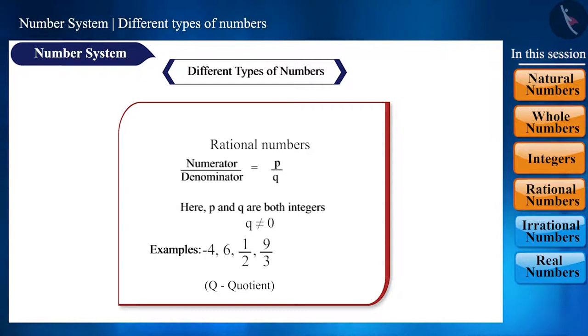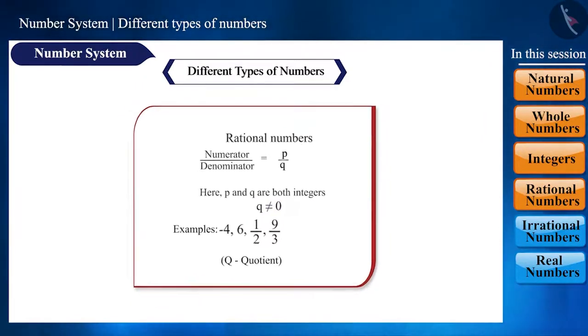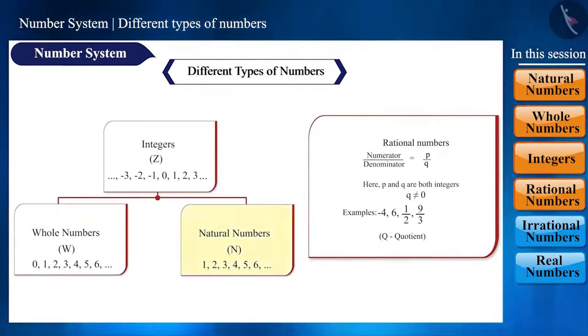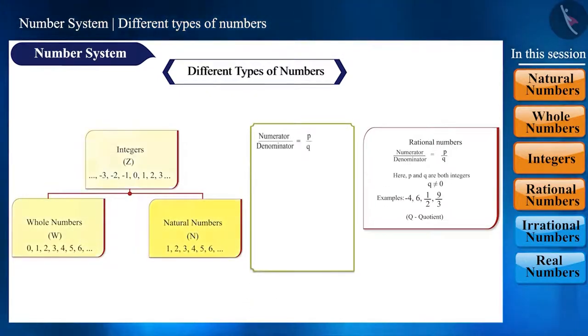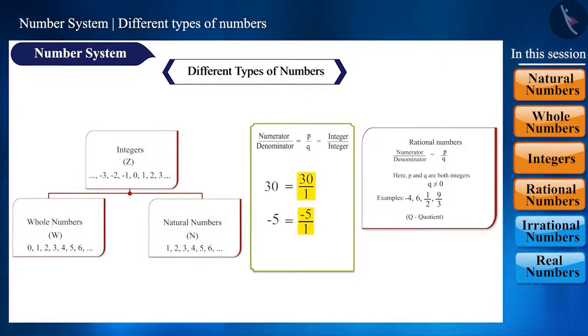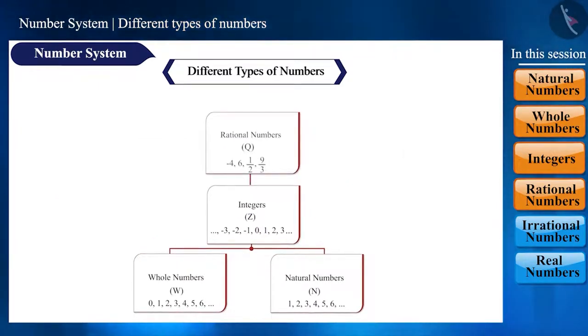Friends, if we pay attention to the definition, why is it said that q should not be 0? And can we call all the numbers seen so far as rational numbers? Yes, we can represent all these numbers in the form p by q. Such as, 30 is equal to 30 by 1. Minus 5 is equal to minus 5 by 1. Here the numerator p and the denominator q are both integers. That is, all these numbers are rational numbers.